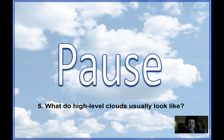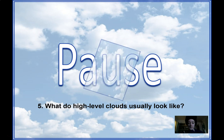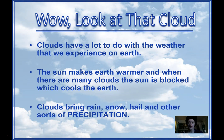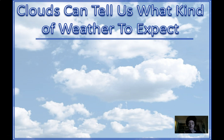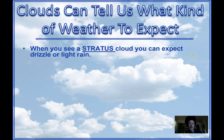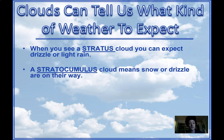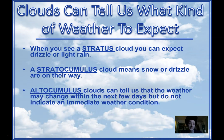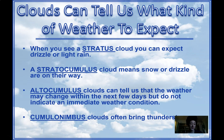Pause your video for question number five: what do high level clouds usually look like? High level clouds usually look like wispy, thin, feathery shapes. Clouds have a lot to do with the weather we experience on Earth. The sun makes Earth warmer, and when there are many clouds, the sun is blocked, which cools the Earth. Clouds also bring precipitation: rain, snow, and hail. Clouds can tell us what kind of weather to expect: stratus clouds mean a drizzle or light rain; stratocumulus clouds mean snow or drizzle; alto-cumulus clouds tell us weather may change in a few days; and cumulonimbus clouds bring thunderstorms. When you see nimbus, that means storm.